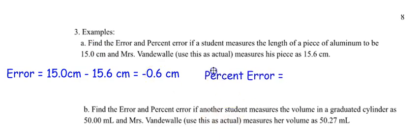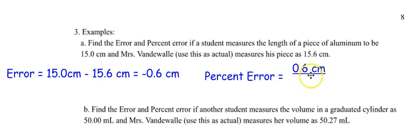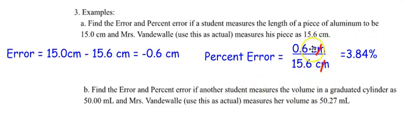For percent error, take the absolute value of negative 0.6 centimeters — so it becomes positive — divide by the actual value of 15.6, and multiply by 100%. Notice the centimeters cancel out. Using your calculator: 0.6 ÷ 15.6 = 0.0384, times 100% gives 3.84%. I misspoke earlier but I caught my error — speaking of error.